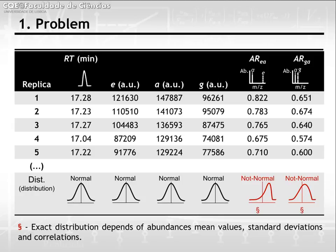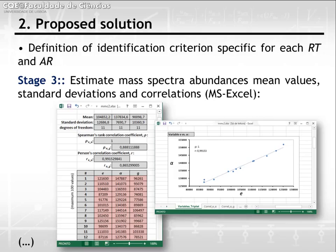The exact shape of the distribution depends on abundance mean values, standard deviations, and correlations. The definition of criteria for abundance ratios starts with the assessment of abundance mean values, standard deviations, and correlations using an Excel file made available with the manuscript. On screen, you can see the abundance of three chlorpyrifosmethyl fragments, where their mean value, standard deviation, degrees of freedom, and the correlation of pairs of abundance values are estimated.